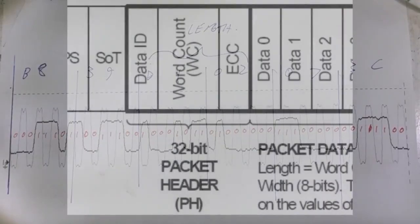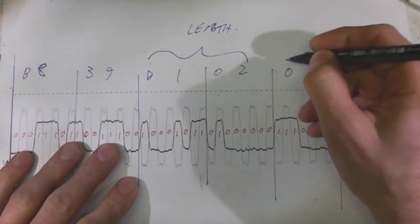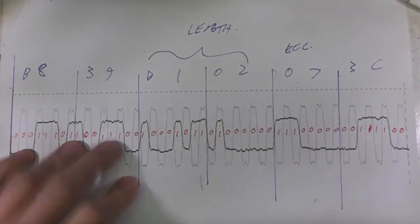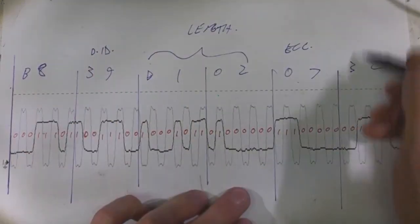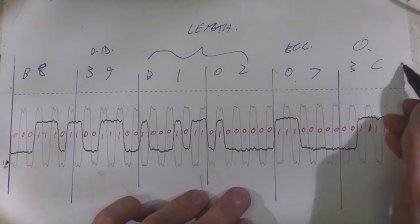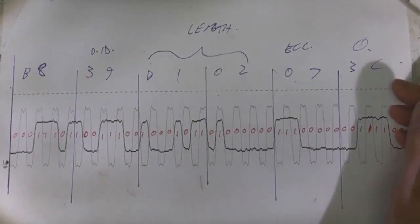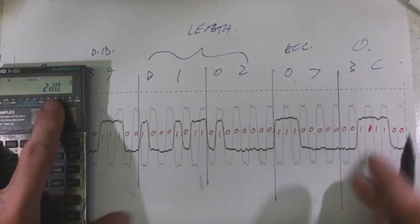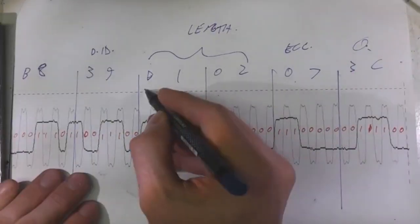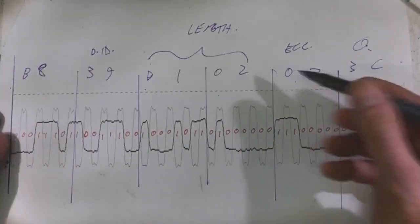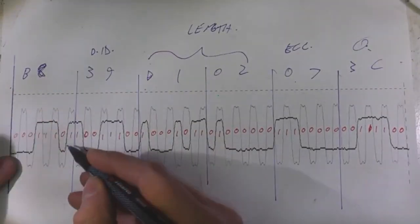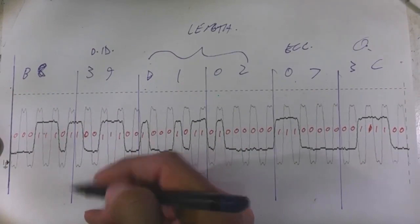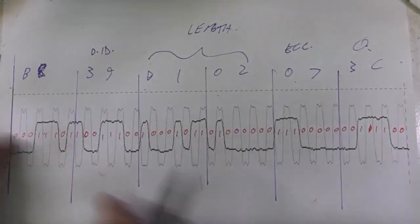Looking back at the Agilent information we can also identify the ECC byte and the data ID field. Our image data starts from there onwards: 0x2D0 hex bytes of image data plus that extra one, giving 0x2D1. The only thing we don't know is the 0xB8 byte, which may be some sort of synchronisation header. This gives us enough information to probably start actually generating data and throwing it at the display out of an FPGA or similar.